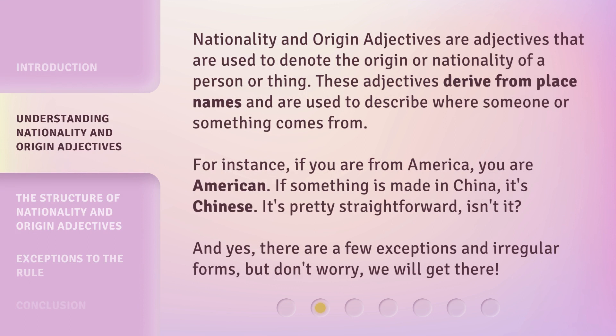Nationality and origin adjectives are adjectives used to denote the origin or nationality of a person or thing. These adjectives derive from place names and are used to describe where someone or something comes from. For instance, if you are from America, you are American. If something is made in China, it's Chinese. It's pretty straightforward, isn't it? And yes, there are a few exceptions and irregular forms, but don't worry, we will get there.